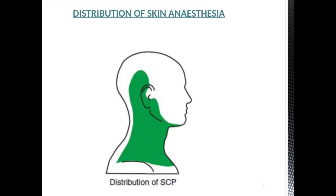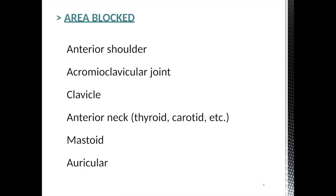This is the distribution area of the skin supplied by the cervical plexus, C2-C3-C4. The areas blocked by this plexus include the anterior shoulder, acromioclavicular joint, clavicle, anterior neck, thyroid, carotid, mastoid, and auricle of the ear.